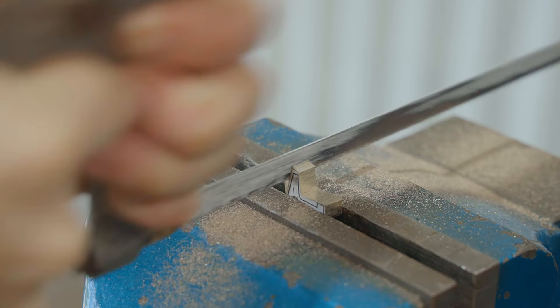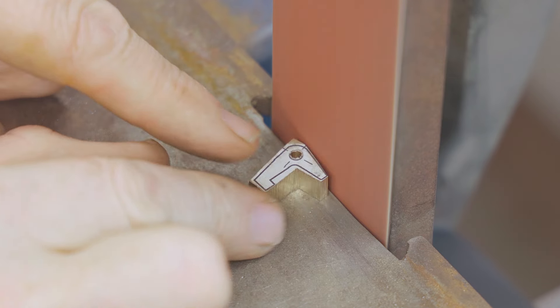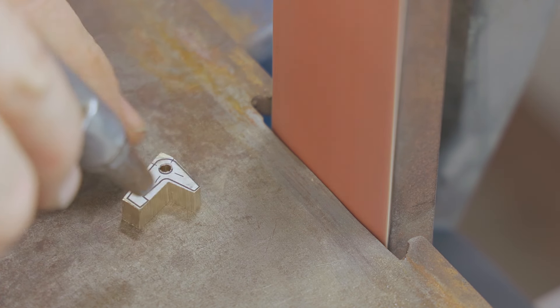I can use the belt grinder on the outside of this part but I'll do the inside with files, and as the brass gets super hot I'll keep it cool with a blast of compressed air.